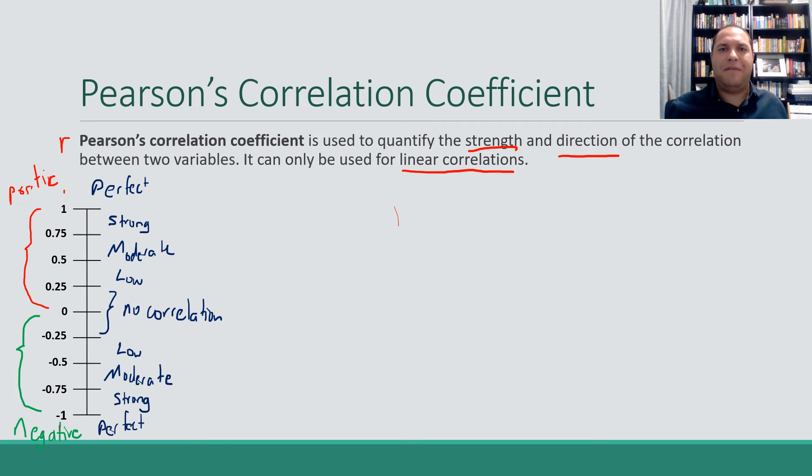And so once we have our value for R, once we have our correlation coefficient, we can actually write our sentence describing the trend in our data really easily.